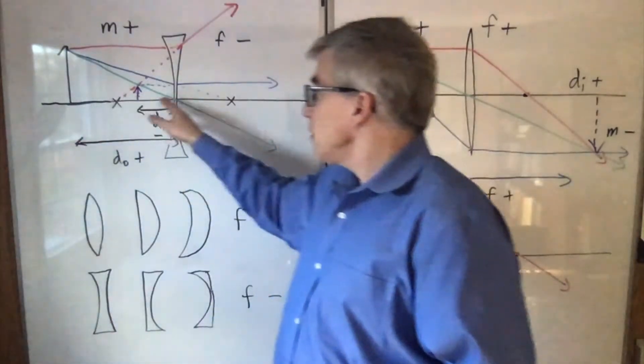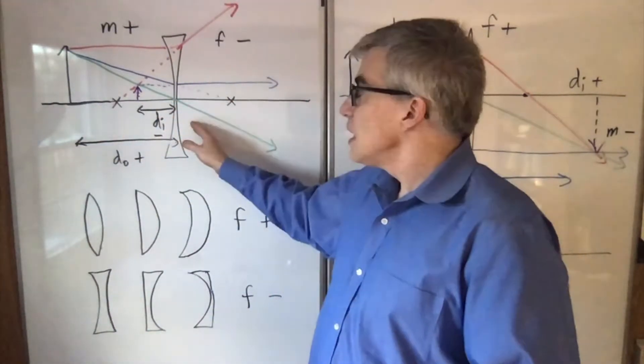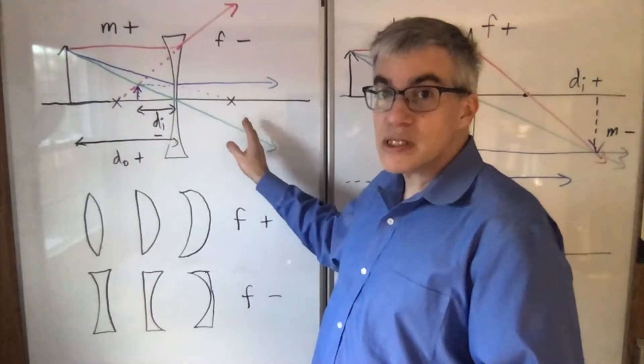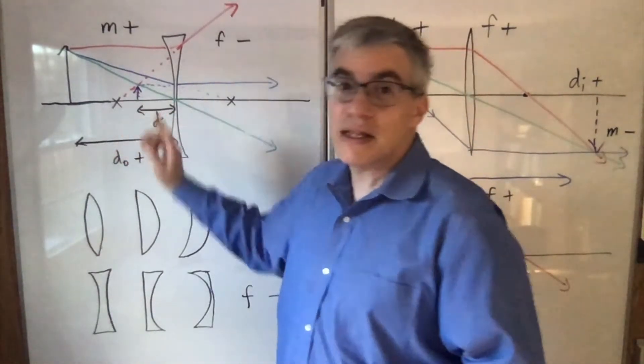You have a positive DO, and then the light goes through. If it's on the other side, the DI counts as positive. If it's on the same side, the DI counts as negative.